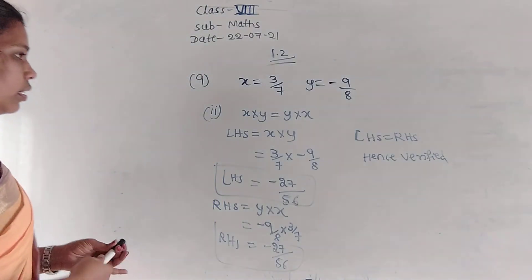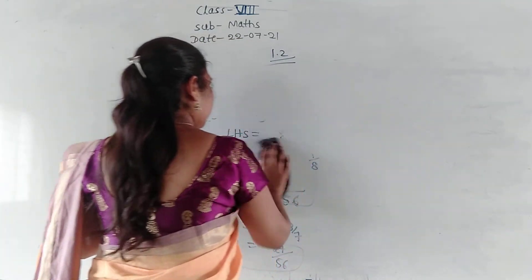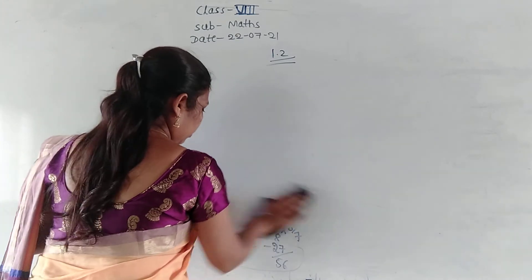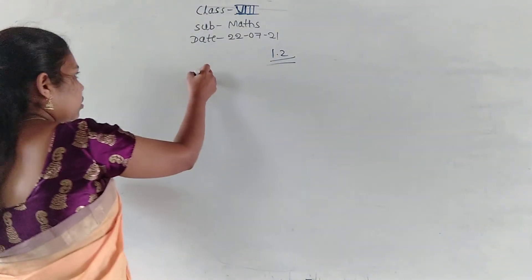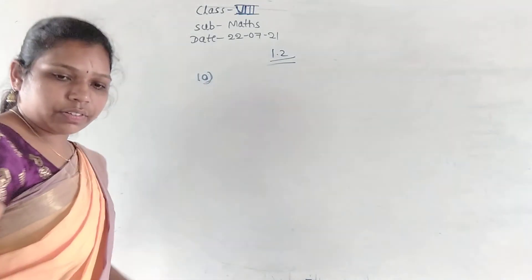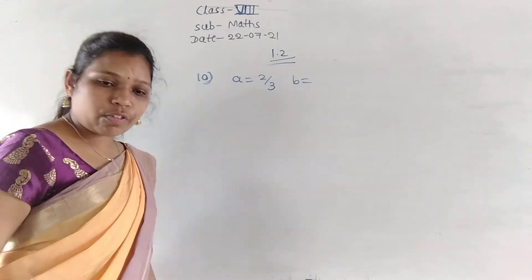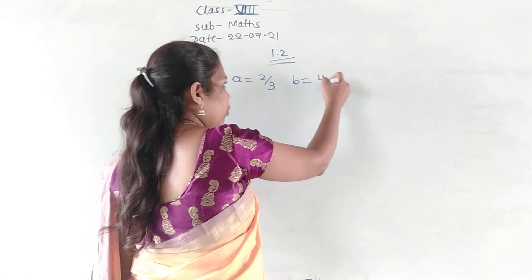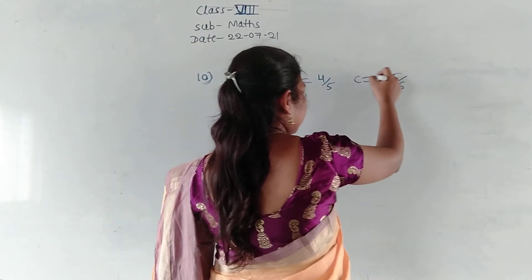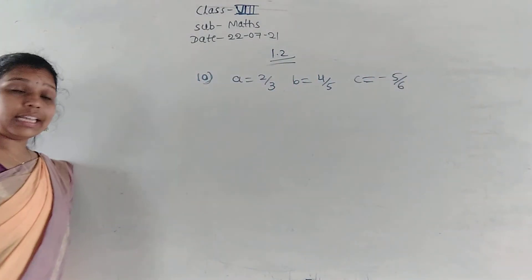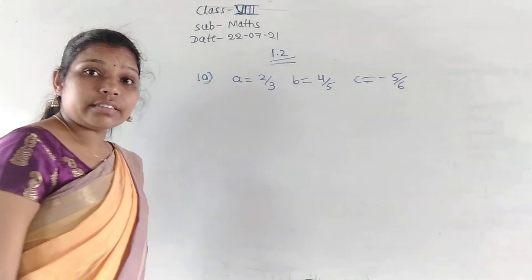So, now we will begin with the 10th one. 10th one. They give us here an A value. What is the A value? A is equal to 2 by 3. And what is the value of B here? B is 4 by 3. And C value is minus 5 by 6. They give an A value as 2 by 3 and B value as 4 by 5. And C value as minus 5 by 6 here.